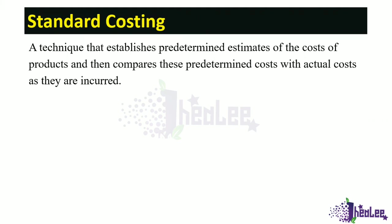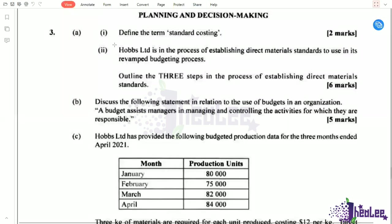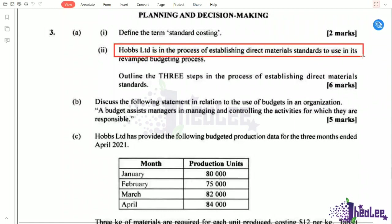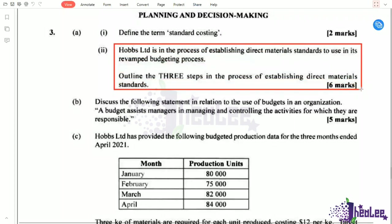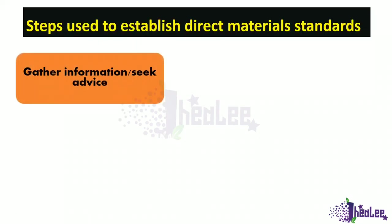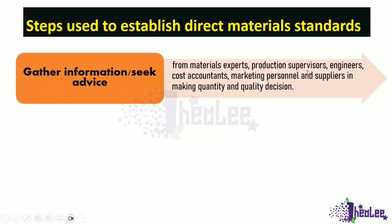Any other appropriate response will do. Moving into the next part of the question, we are presented with information relating to OBS Limited, which is in the process of establishing direct material standards for its revamped budgeting process. We are asked to outline the three steps in establishing direct materials standards. The first step is to gather information or seek advice from materials experts, production supervisors, engineers, cost accountants, marketing personnel, and suppliers in making quantity and quality decisions.